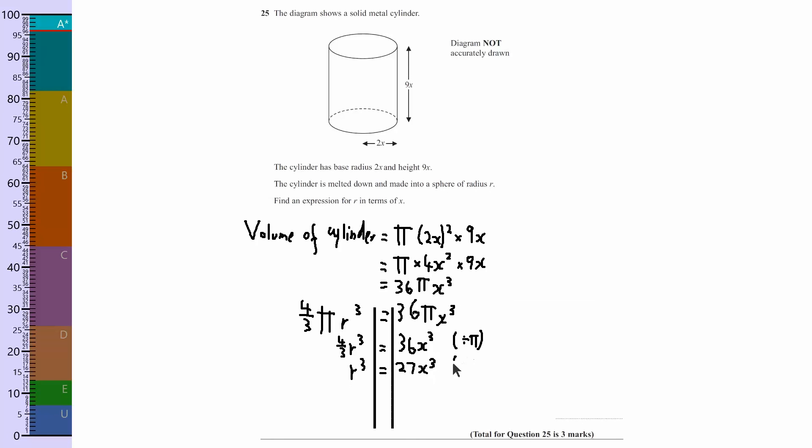So what I've done here is divided by 4 thirds, both sides. And I've got r cubed equals. Well, I don't want r cubed equals, I want r equals. So to get r equals, what I need to do is cube root both sides.